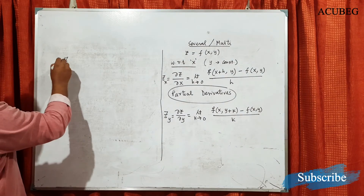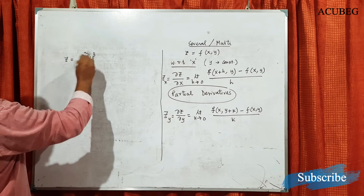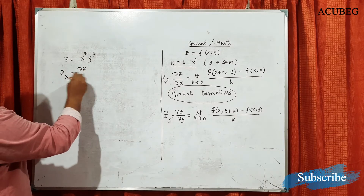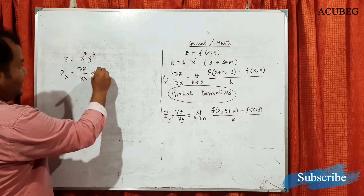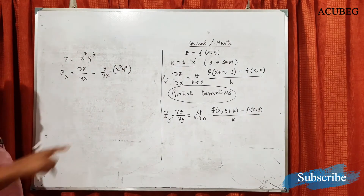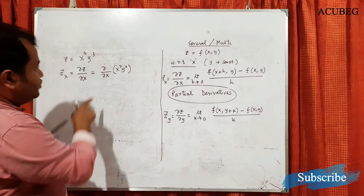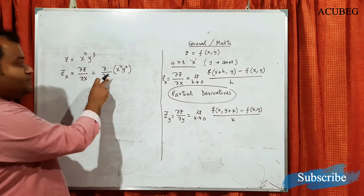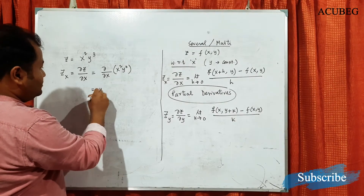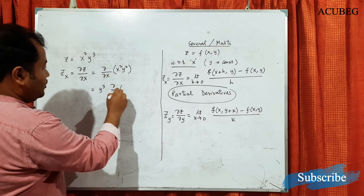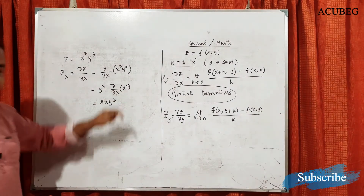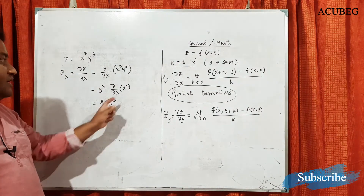Let me give one example. Say z = x²y³. If you want to find zx, that is del z / del x, you compute del/del x of (x²y³). Since this is a partial derivative with respect to x, y is treated as a constant, so y³ comes out as a constant factor: y³ · del/del x of x² = y³ · 2x = 2xy³.